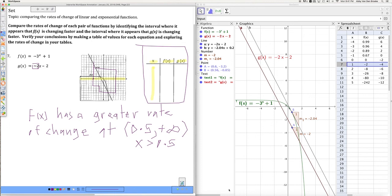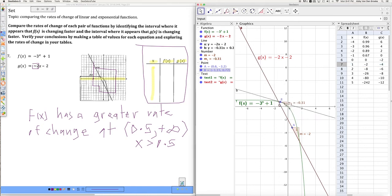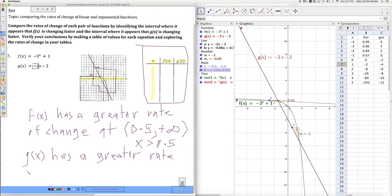Now, where is g of x changing faster? Well, it occurs when these values here are less than negative 2. And that's anything less than 0.5, those values. So it looks like g of x... now be written as x is less than 0.5